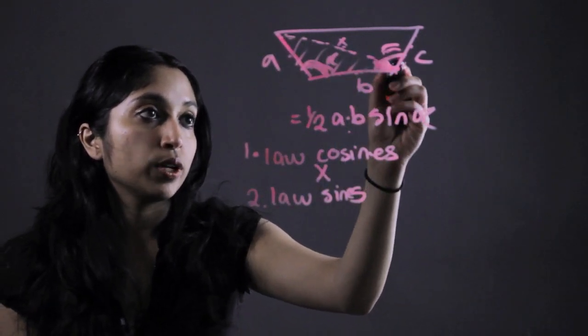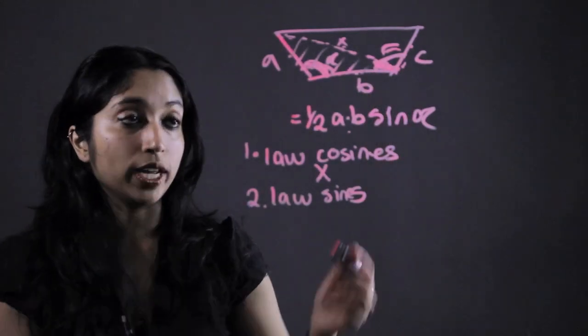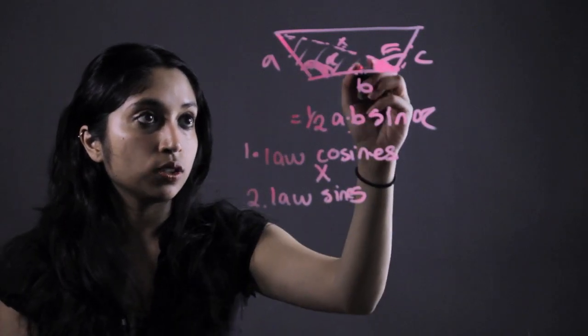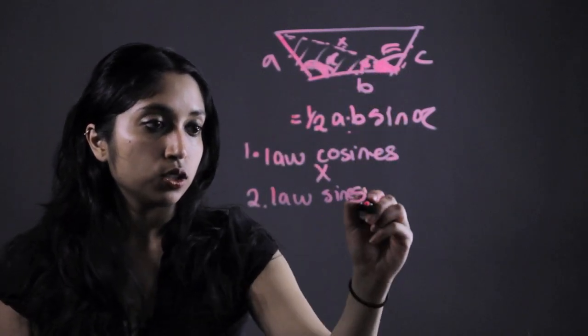Because if we look here, this diagonal breaks the angle we already know into two angles. So we can use that law of cosines to solve for this guy in here. Let's call this beta. Solve for beta.